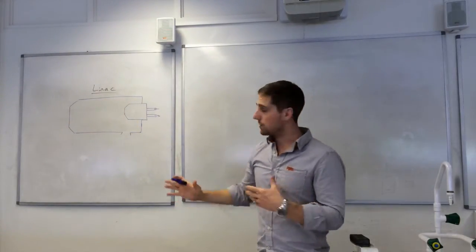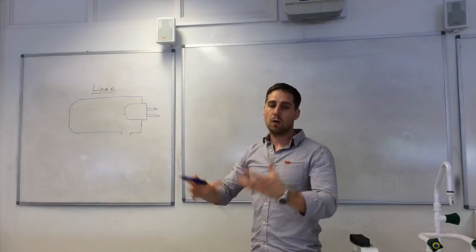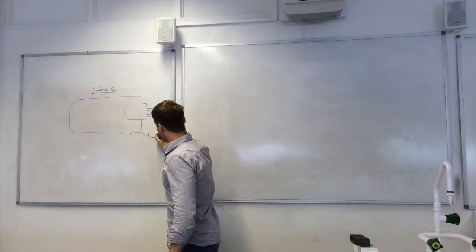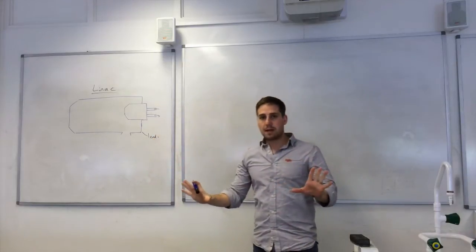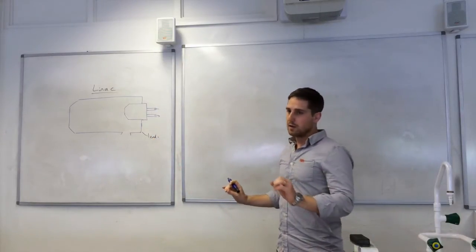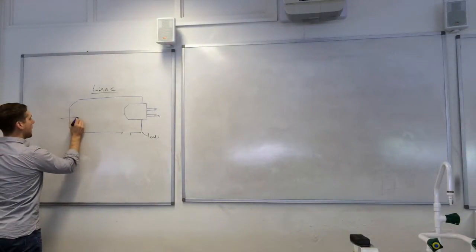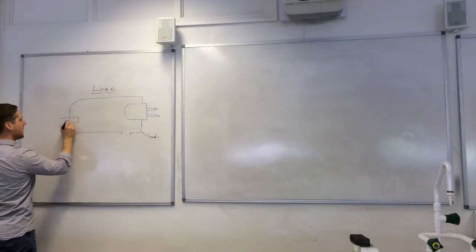Lead absorbs X-rays so it stops any stray X-rays going where we don't want them. So that's the lead casing there. There are three main components that you need to label in this linac. They are firstly, we have a cathode filament in here.